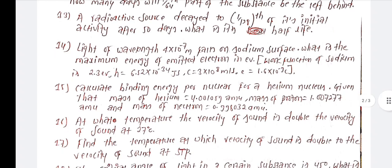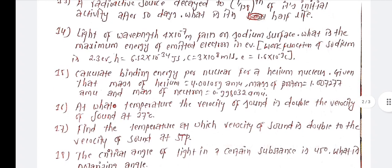At what temperature is the velocity of sound double the velocity of sound at 17 degrees Celsius? Find the temperature in degrees Celsius at which the velocity of sound doubles compared to its value at 17 degrees.